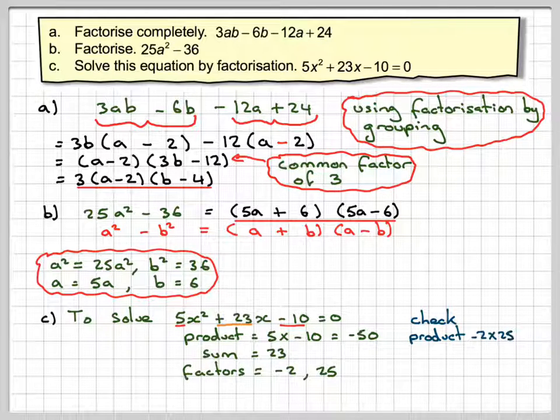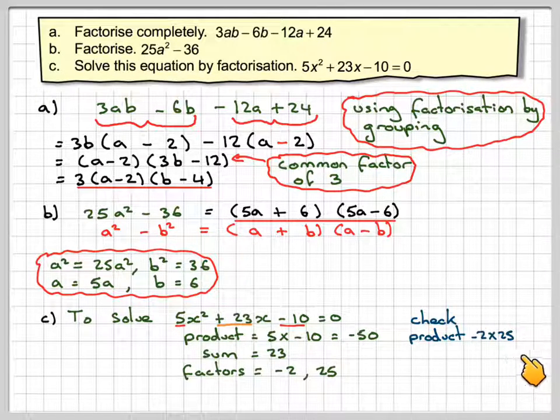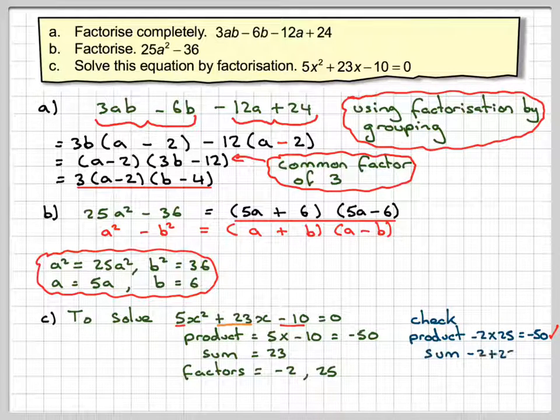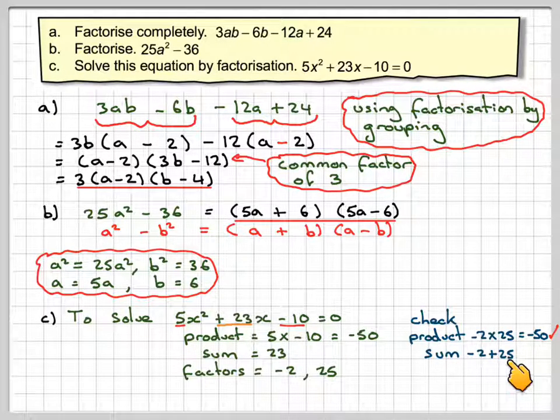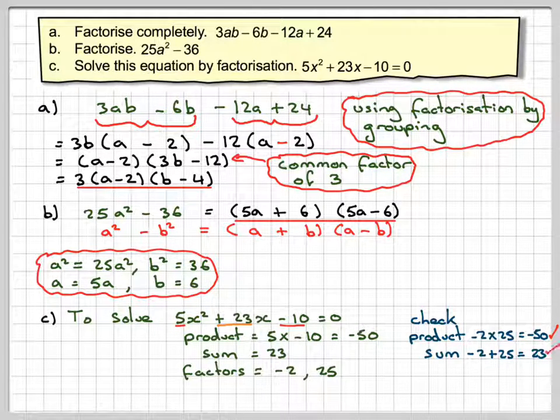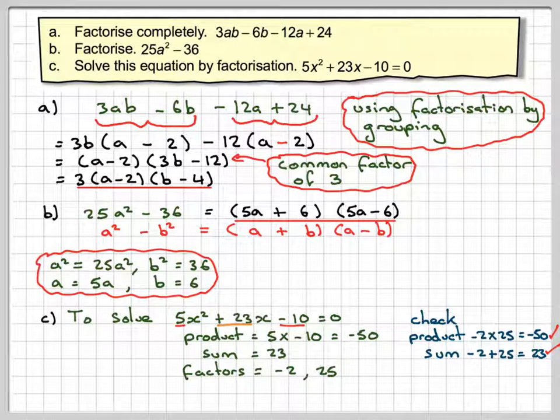A little check will show that the product, in this case, minus 2 times 25, does in fact give me minus 50, so that's okay. And then if I sum them together, minus 2 plus 25 also gives me plus 23. So you need to be careful with the signs here when you do this.